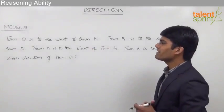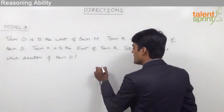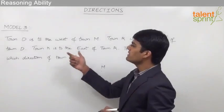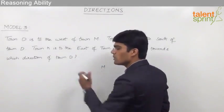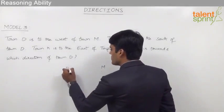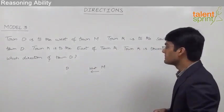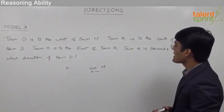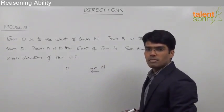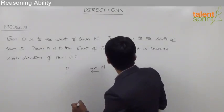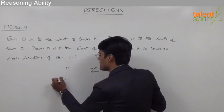The first statement is town D is to the west of town M. Let us assume that town M is in this position, and as given, town D is to the west of town M — west of town M should be towards our left. So taking town D towards the west of town M. Next, town R is to the south of town D. The south of town D is nothing but towards the bottom of D on paper. So we can say that town R is in this position, towards the south of town D.